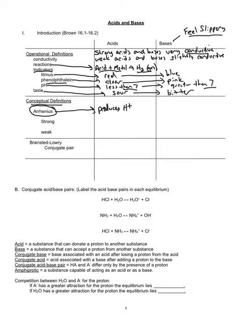Hydrogen ions are very unstable and they tend to very quickly react with a water molecule to produce hydronium. So a hydronium ion and an H⁺ are synonymous with one another — an increased hydronium ion is the same thing as an increase in hydrogen ion. Acids produce hydronium ions in water.